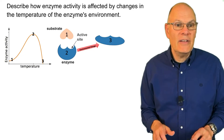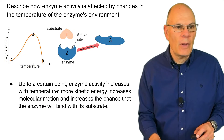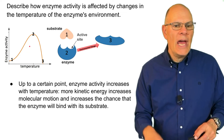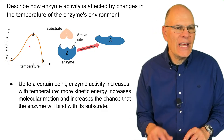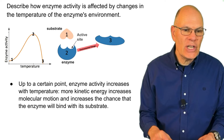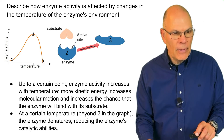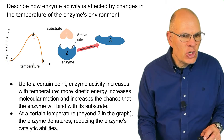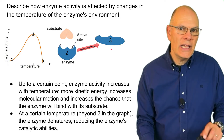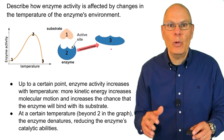Describe how enzyme activity is affected by changes in the temperature of the enzyme's environment. Up to a certain point, enzyme activity increases with temperature because there's more kinetic energy that increases molecular motion, increasing the chance that the enzyme will bind with its substrate and catalyze the reaction. But beyond that point — shown as point two on the graph — the enzyme will denature, changing its shape and reducing its catalytic abilities because it can no longer bind with its substrate.